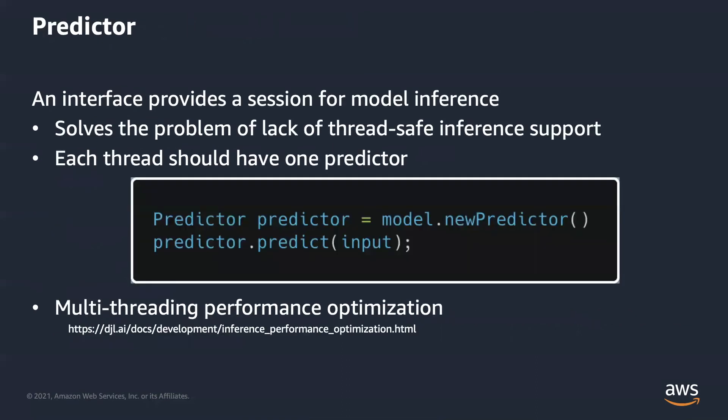One of the key advantages of using Java is its powerful multi-threading features. Unlike Java, Python has its own limitations on threading due to the global interpreter lock, so some deep learning frameworks don't handle multi-threading use cases well. To mitigate the impact, DJL introduced the Predictor, which provides a session concept for model inference. When you run inference concurrently, each thread should have its own predictor to make sure the inference code is thread-safe. Under the hood, if the engine doesn't support thread-safe inference, DJL duplicates the model pointers to avoid race conditions and manages the resource for you.